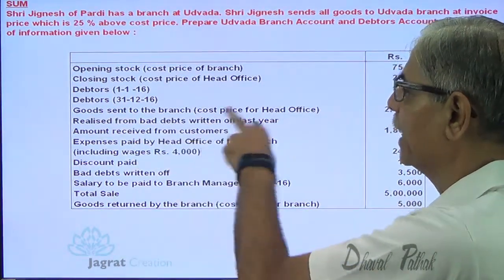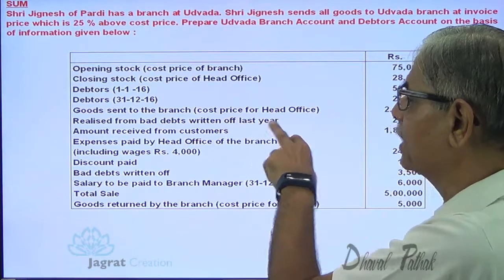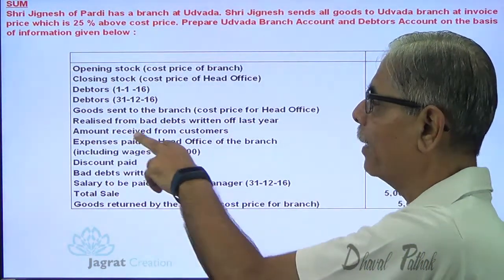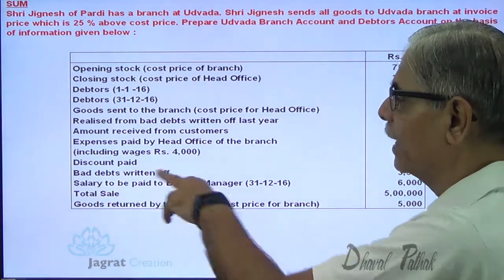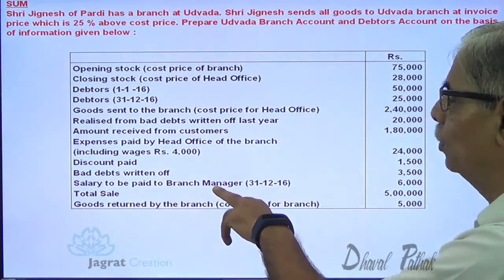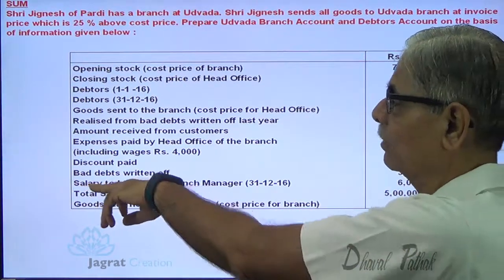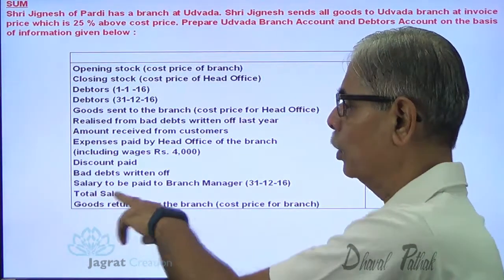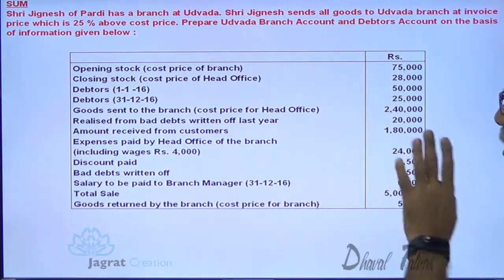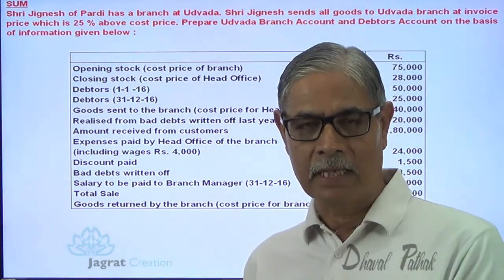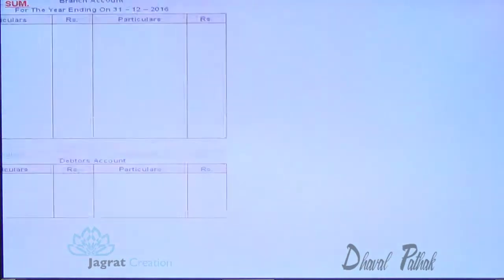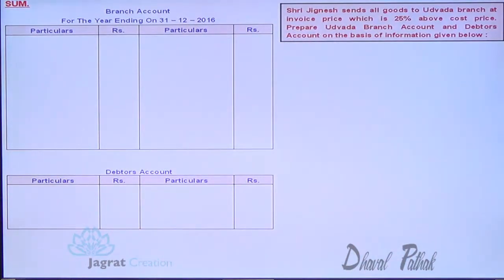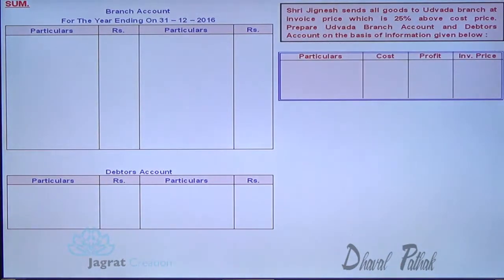The data given includes: opening balance of debtors, creditors, goods sent to branch. Realized from bad debts return of last year - so it is an income. Amount received from customers, expenses paid by head office for the branch including wages 4,000. Discount paid means discount allowed, bad debts written off. Salary to be paid to branch manager on 31st December 2016 - this is a liability at the end of the accounting period. Total sales, goods returned by branch at cost price of branch means invoice price. On this basis I am required to prepare branch account and debtors account. The purpose of preparing branch account is to find out the profit.